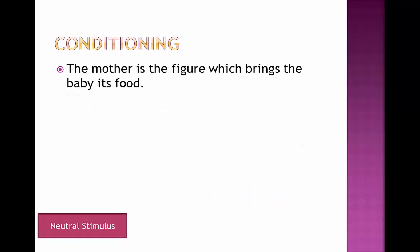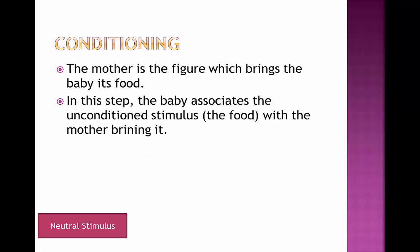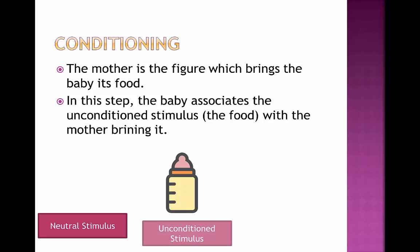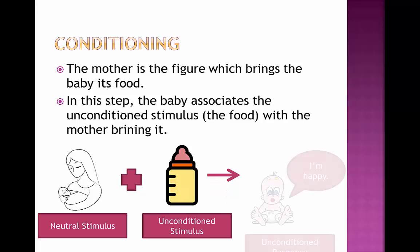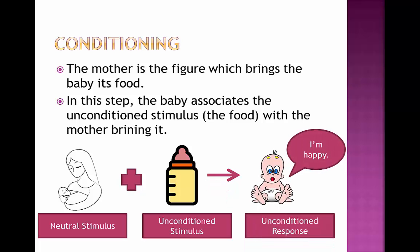The next step is conditioning. Here we have a neutral stimulus, where the mother is the figure who is going to bring the baby its food. In this step, the baby is going to associate the unconditioned stimulus with the mother bringing it. So the unconditioned stimulus is the food, but we add the mother, who is the neutral stimulus, to this. Remember in Pavlov's study, the unconditioned stimulus was the food and we add the neutral stimulus, which is the bell. In this case we get a reaction from the baby — an unconditioned response — so the baby becomes happy because the mother is going to bring it the food.